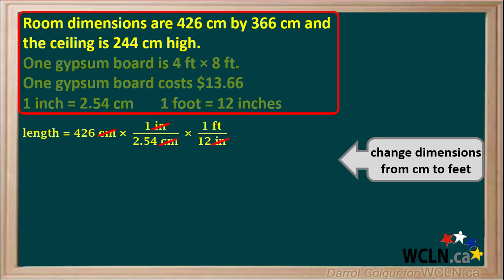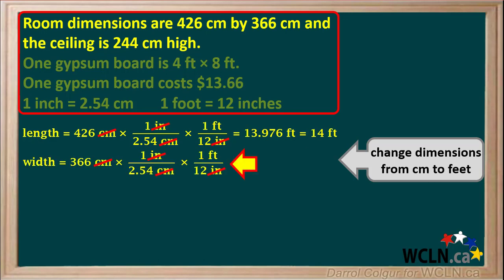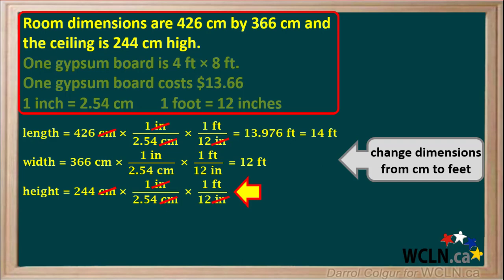To calculate feet, we take 426, divide by 2.54, and divide that answer by 12, giving us 13.976 feet, which can be rounded to 14 feet. We do the same conversions for width, which is 366 centimeters, and it works out to 12 feet. And the height is 244 centimeters, which works out to 8 feet.